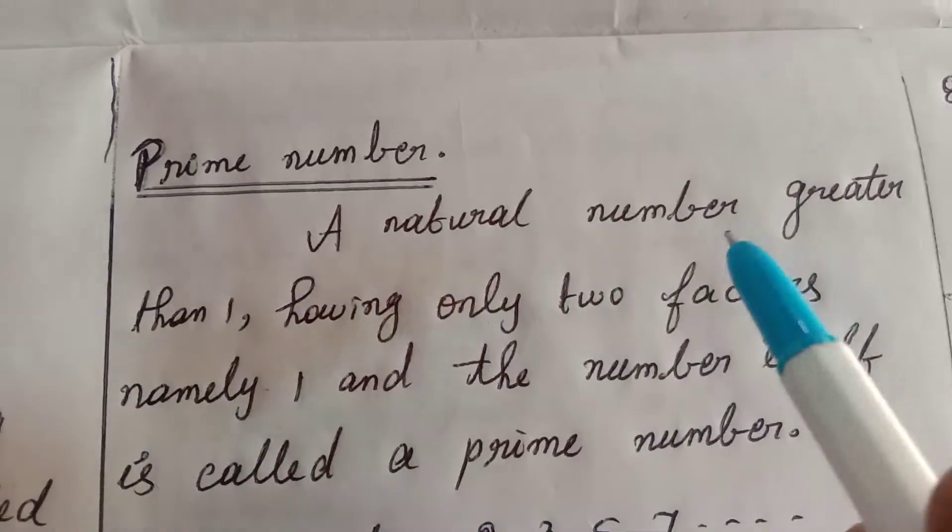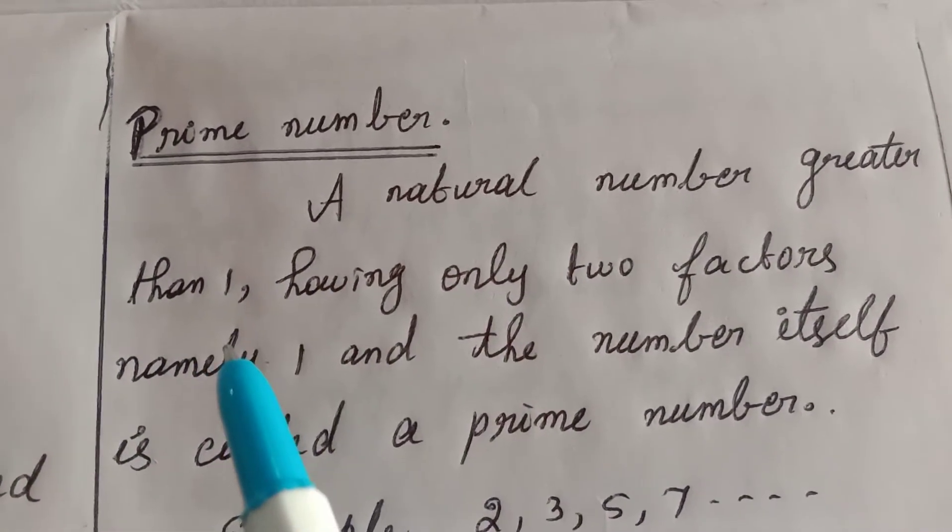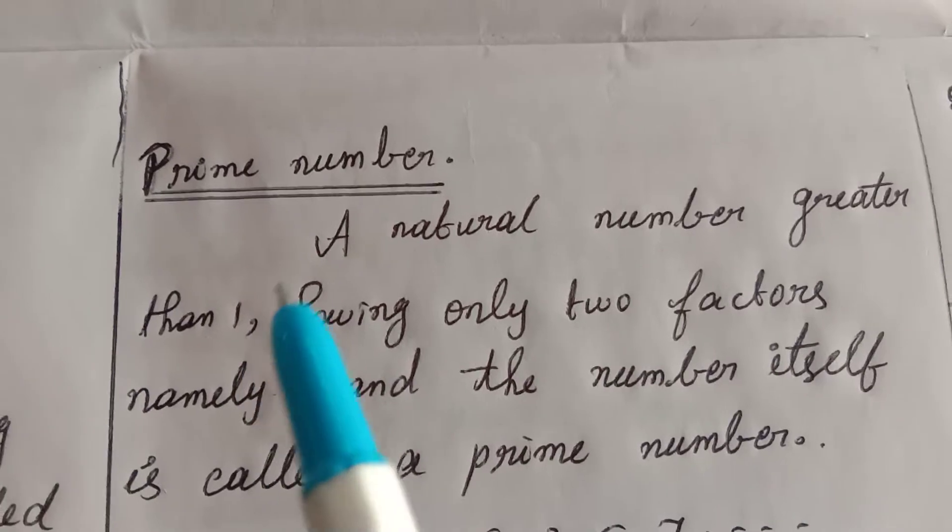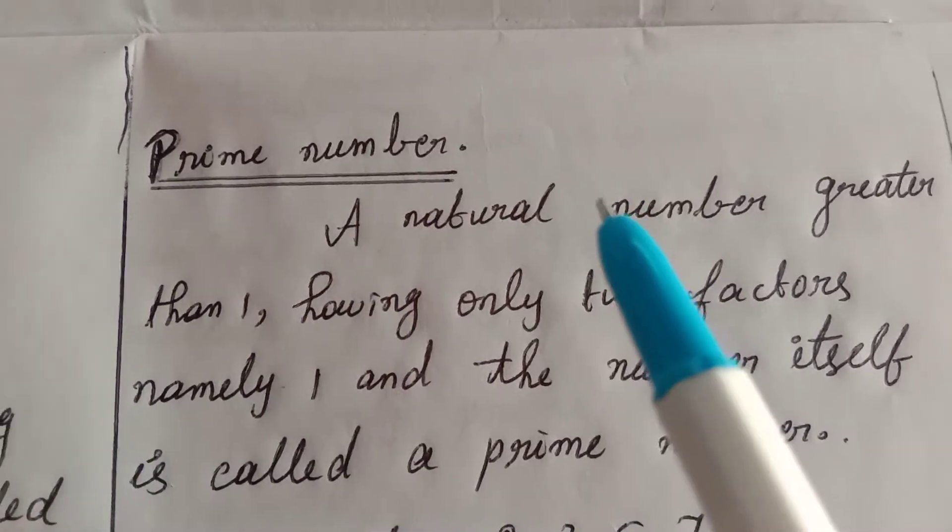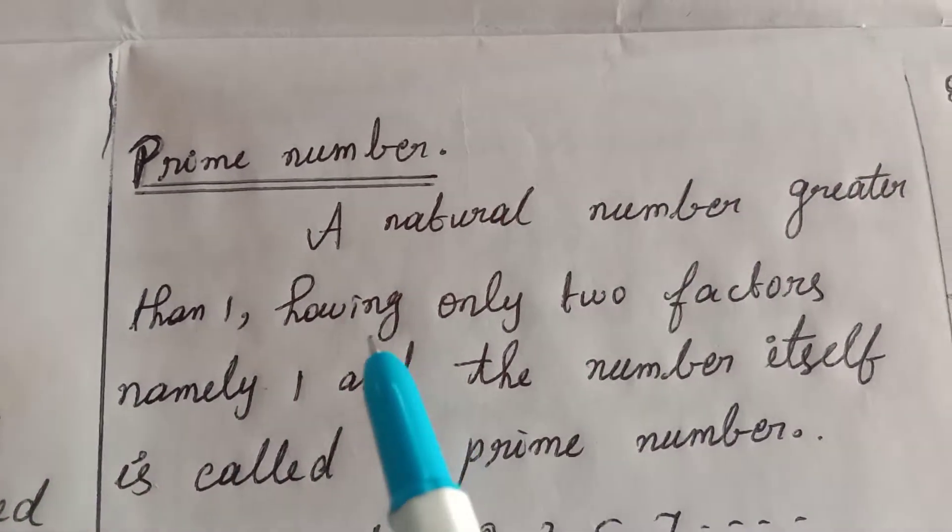What is this? A natural number greater than 1. Why say greater than 1? 1 is not a prime number, not a composite number.